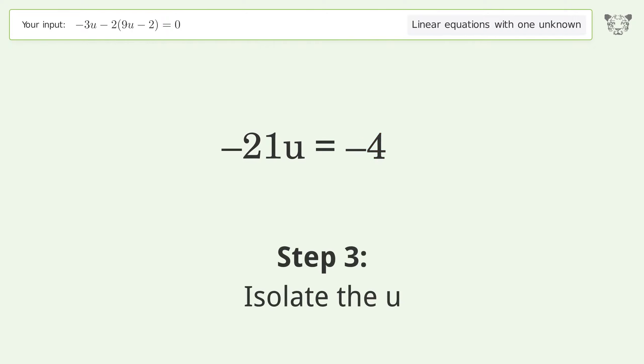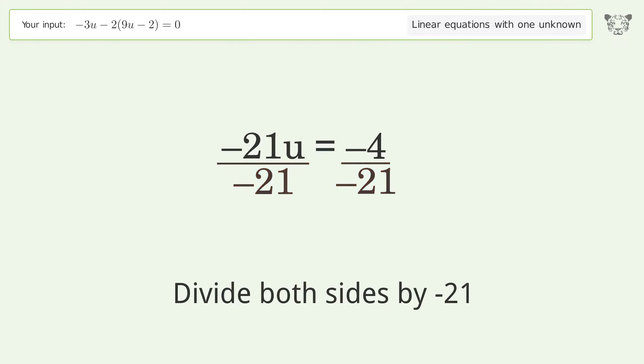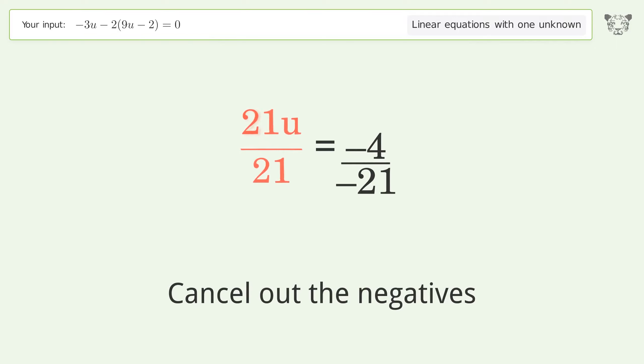Isolate the u. Divide both sides by negative 21. Cancel out the negatives. Simplify the fraction.